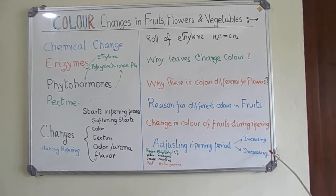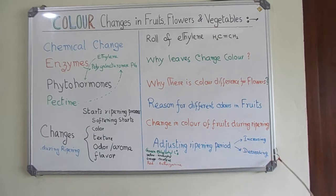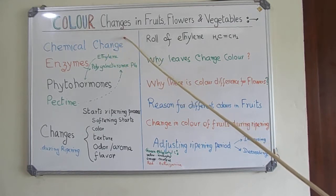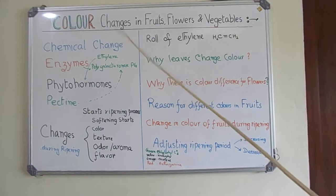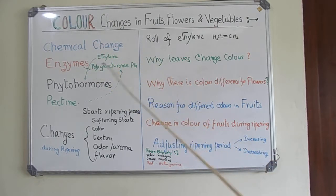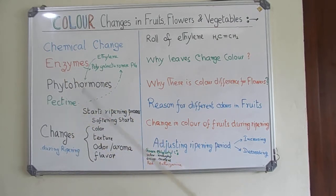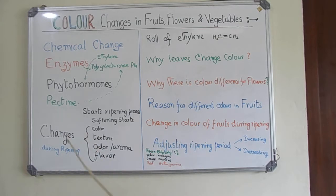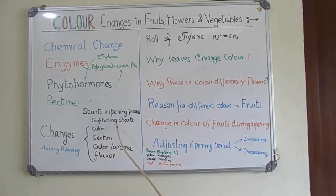We can also decrease the ripening period by using specific compounds. Now, to summarize the chemical changes taking place: it is irreversible. Enzymes are responsible for the chemical change, phytohormones are associated with it, pectin is undergoing drastic change, and due to ethylene and polygalacturonase (PG), softening starts, color changes, texture changes, the smell and aroma change.